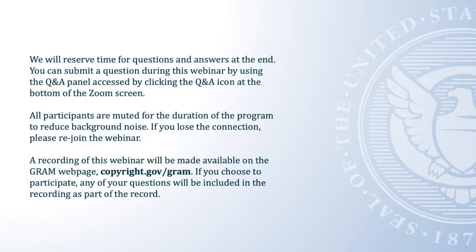We will reserve time for questions and answers at the end. You can submit a question during the webinar by using the Q&A panel accessed by clicking the Q&A icon at the bottom of the Zoom screen. We will answer questions after the presentations are complete; however, we might not answer all of the submitted questions during the webinar. This session is being recorded, and all participants are muted for the duration of the program to reduce background noise. If you lose the connection, please rejoin the webinar. A recording of this webinar will be made available on the GRAM webpage at copyright.gov/GRAM. If you choose to participate, any of your questions will be included in the recording as part of the record.